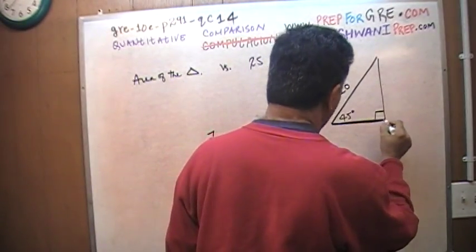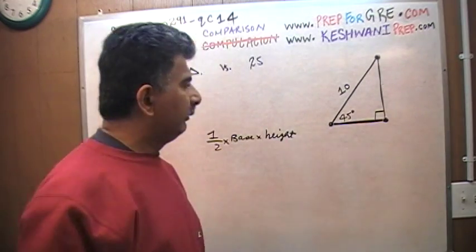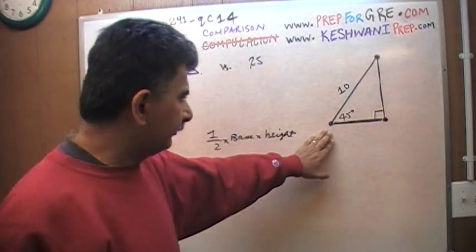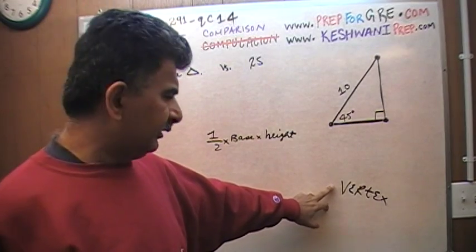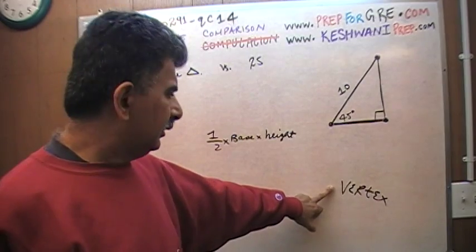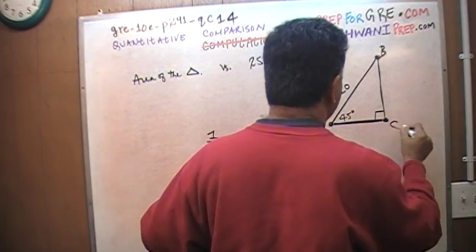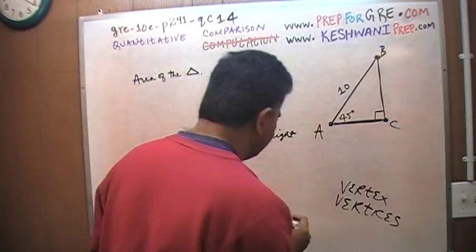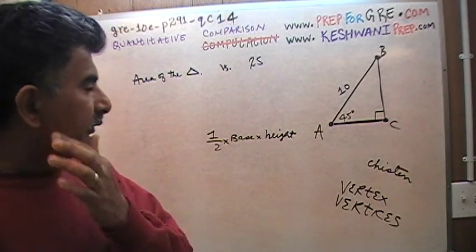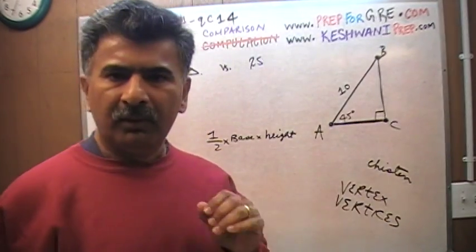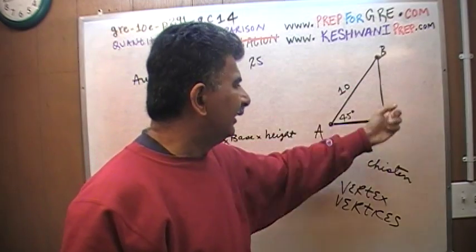So we have to find this base and somehow we have to find this height. Let's see what we can do. In order to make our life easier, I am going to give these corners, these are called vertex. The plural of vertex is vertices. Instead of just leaving them like that, I am going to christen them. And for those of you who do not know what christen means, look it up and learn it. It just means to give something a name. I am going to call these corners A, B, C, so that it is easier for us to talk about these lines. So somehow we have to figure out the line AC and the line BC. Let's see what we can do here.